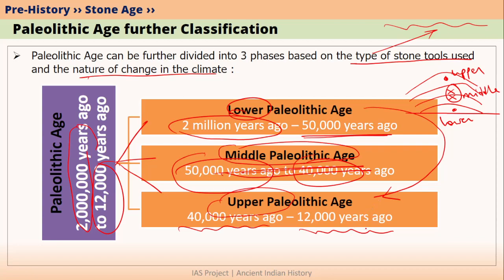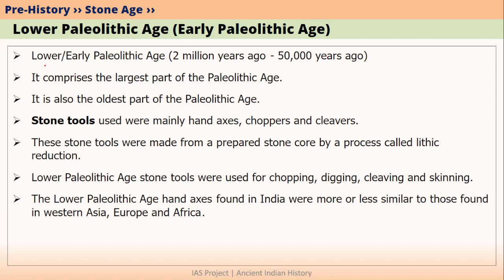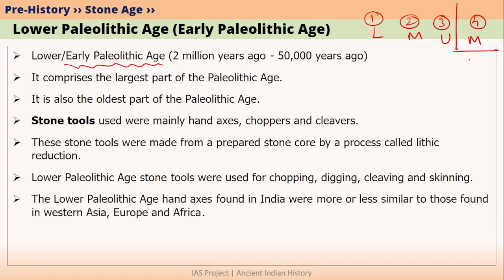Lower Paleolithic Age is also sometimes called Early Paleolithic Age because it was the earliest part. So in Paleolithic Age: first came Lower Paleolithic, second came Middle Paleolithic, and third came Upper Paleolithic. After this there was Mesolithic Age, and after Mesolithic Age there was Neolithic Age. This is how the changes happened.